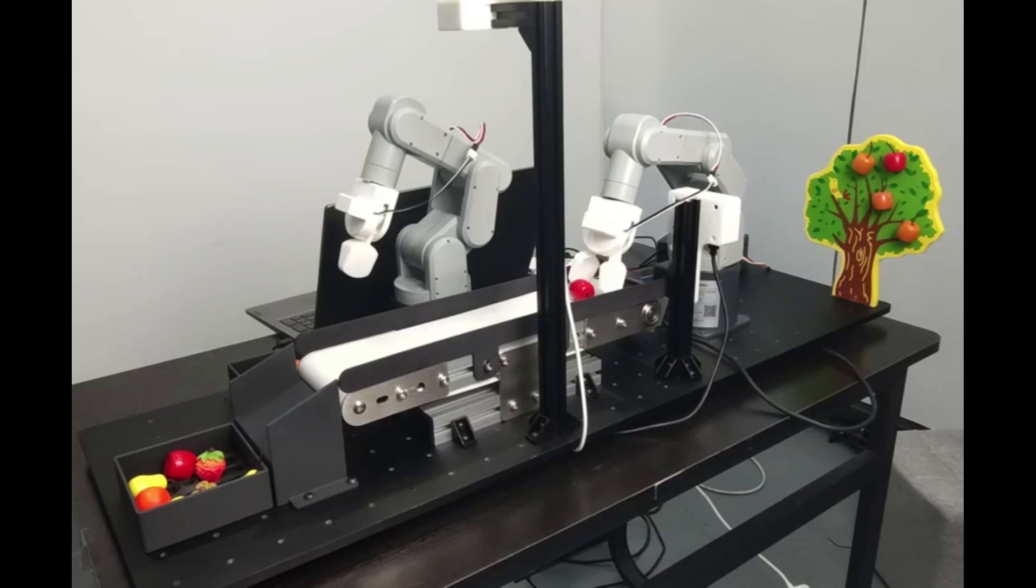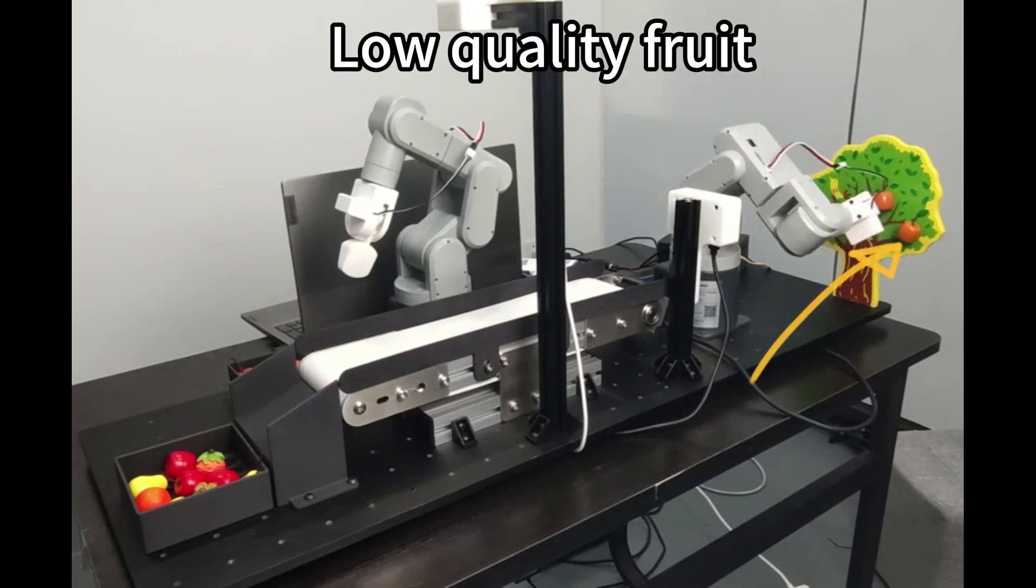The conveyor transports the fruit to a range that can be recognized by Sorting Robot to determine the quality of the fruit.